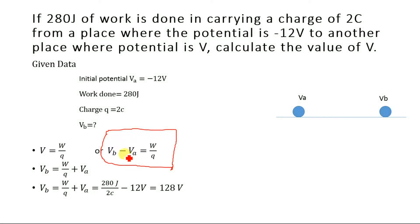Now solving this numerical for VB, we will have VB is equal to W by q plus VA. This VB minus VA represents the change in the potential. VB is the final potential or the potential at the final location and VA is the potential at the initial position.